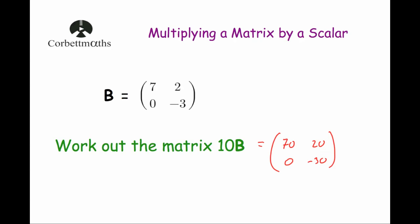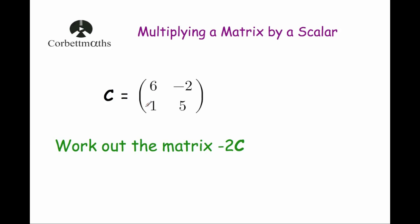Okay, let's look at our next example. We've got matrix C, which is [6, -2; 1, 5]. We've been asked to work out the matrix minus 2C, so all we need to do is multiply all these elements by minus 2.